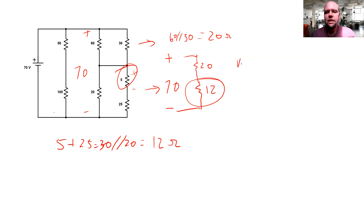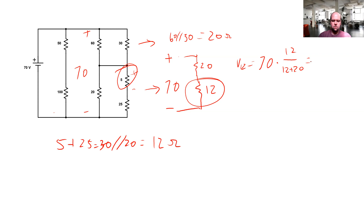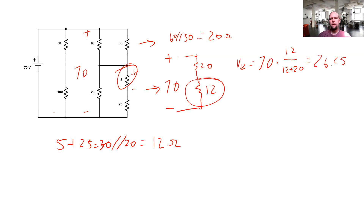So I'm going to use voltage divider to find the voltage across the 12. V₁₂ equals 70 times 12 divided by 12 plus 20, which equals 26.25 volts — that's the voltage across this 12 ohm equivalent. And now we can zoom in on that 12. Unfolding that 12, we have 26.25 volts across this portion of the circuit.